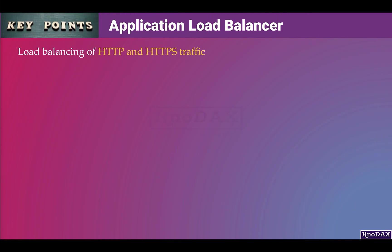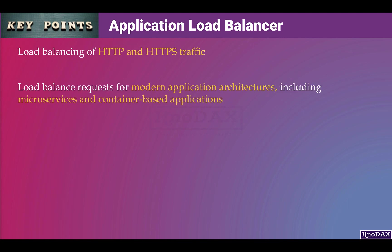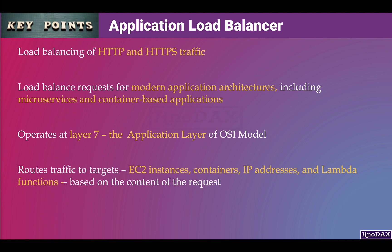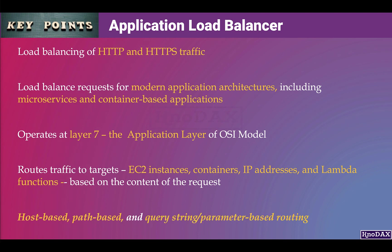Key points of Application Load Balancer: it is ideal for advanced load balancing of HTTP and HTTPS traffic, particularly useful for modern application architectures including microservices and container-based applications. It operates at Layer 7, the application layer of the OSI model, and routes traffic to EC2 instances, containers, IP addresses, and Lambda functions based on the content of the request. It supports host-based, path-based, and query string or parameter-based routing.